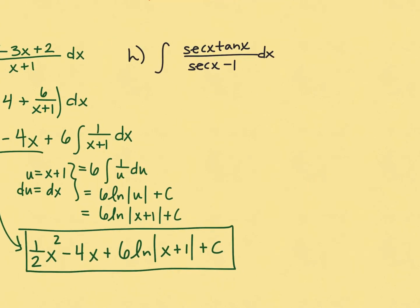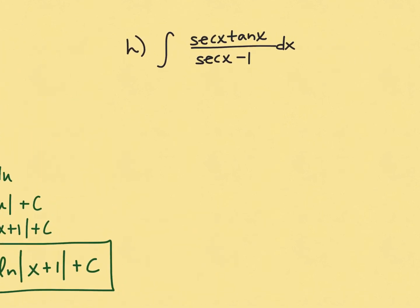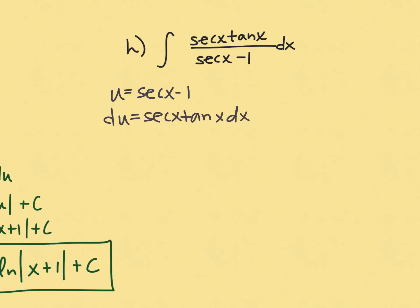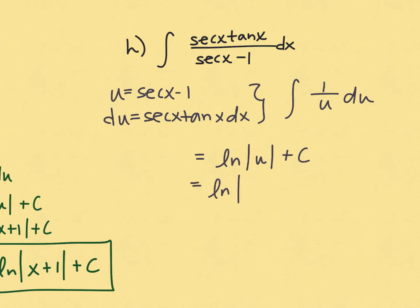For part h, we have the integral of secant x tangent x all divided by secant x minus 1. Secant and tangent are related: the derivative of secant is secant tangent. So if we let u equal secant x minus 1, then du equals secant x tangent x dx — which is exactly our numerator. This becomes the integral of 1 over u du, which is the natural log of the absolute value of u plus c, giving the natural log of the absolute value of secant x minus 1 plus c.